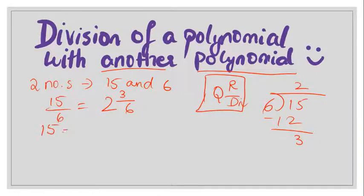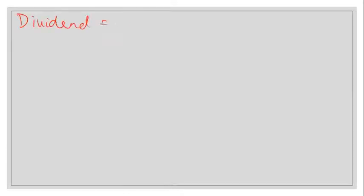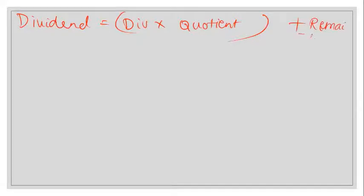From this division, can I write 15 as 6 × 2 + 3? I'm multiplying the divisor with the quotient and adding the remainder. 12 + 3 = 15. So: dividend = divisor × quotient + remainder.